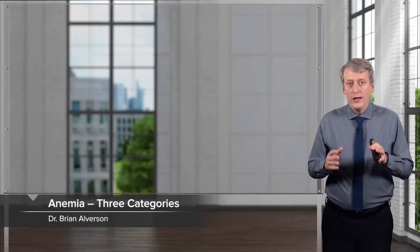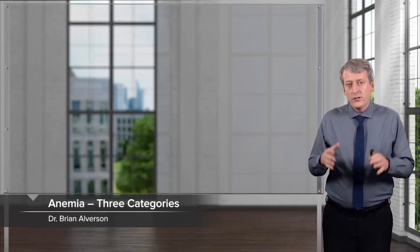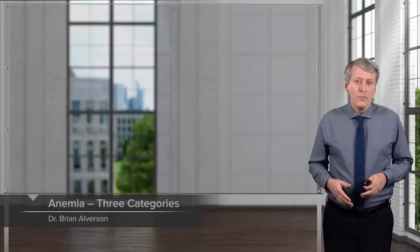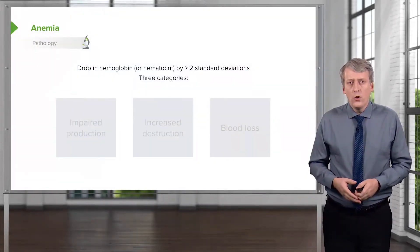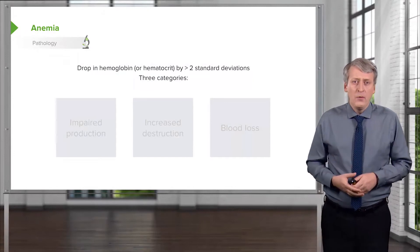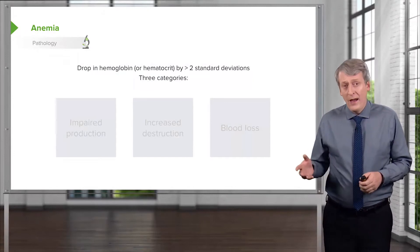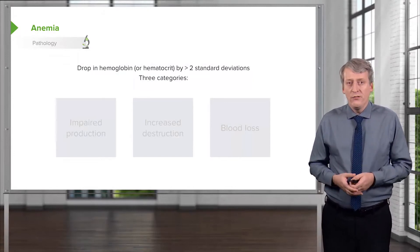In this lecture, we're going to review anemia in children. It's a complicated and broad topic, but we're going to try and cover it in a systematic way. Anemia is a drop in hemoglobin or hematocrit by more than two standard deviations.